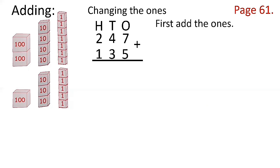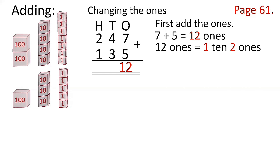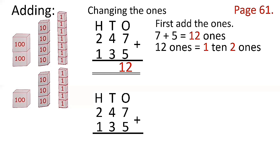Now let's add. First, add the ones: 7 plus 5 is 12 ones. 12 ones is equal to 1 ten and 2 ones. So let's write the ones place, tens place, and hundreds place and write 247 plus 135. 7 plus 5 is 12 — bring down the 2 and carry 1 to the tens place.